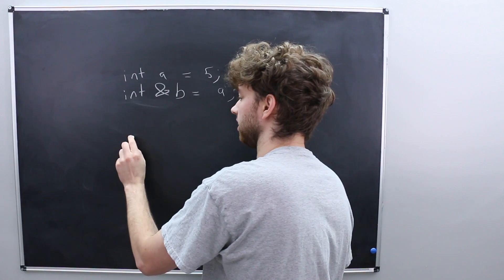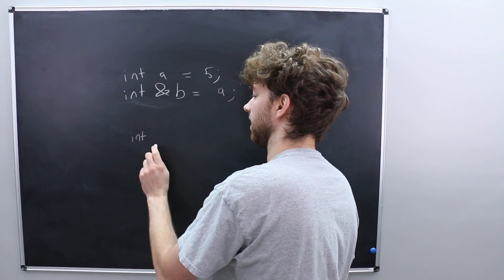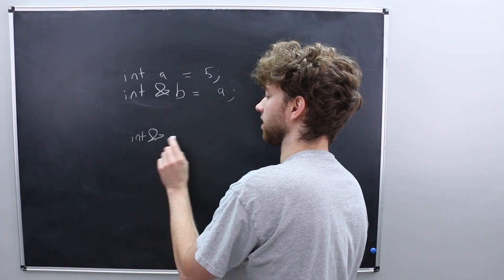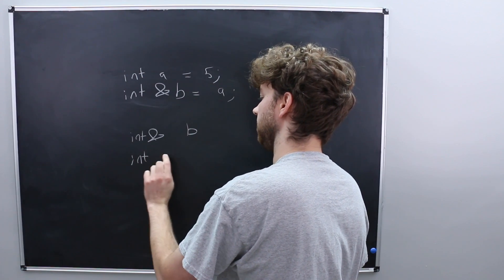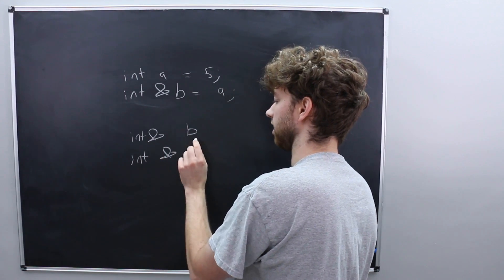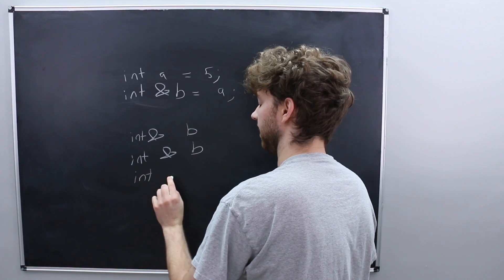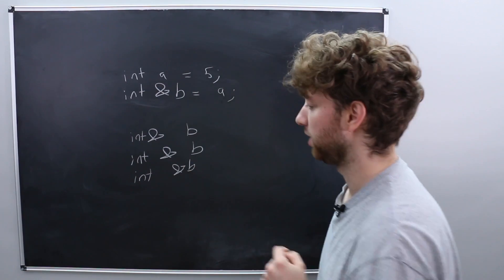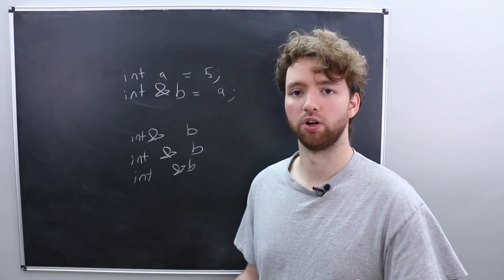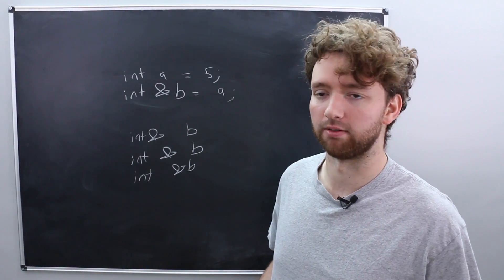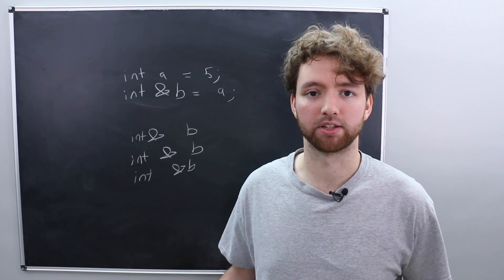So just to repeat what I said here, you might see it as int ampersand space b, int space ampersand space b, and int space ampersand b. All three of these are valid. So don't worry about which one to use. You're going to see all of them probably in your C++ development.